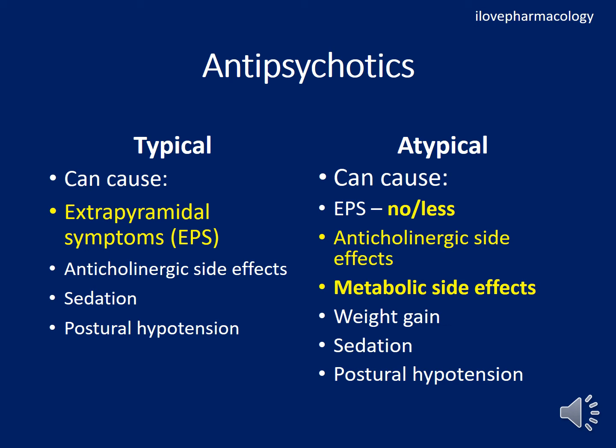Regarding side effects, typical antipsychotics can cause extrapyramidal symptoms. This is the most commonly produced side effect, due to dopamine blockade. Extrapyramidal symptoms include acute muscular dystonia, parkinsonism, akathisia, neuroleptic malignant syndrome, and tardive dyskinesia. The earliest side effect to appear is acute muscular dystonia.